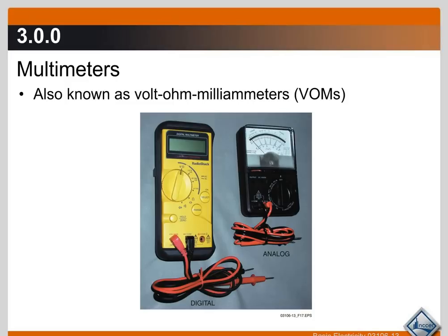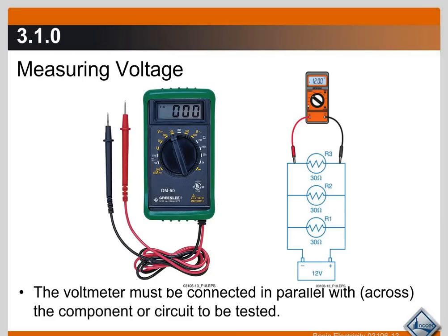We'll start with multimeters, also known as volt-ohm-milliammeters. Today they also measure temperature, capacitance, and some measure the velocity of air coming out of ductwork — there are a lot of different options. Here are two basic volt-ohm-milliammeters: a digital and an analog meter. Analog meters are old school — you'll probably never own one. This digital meter here is also getting to be a bit old school with all the new meters coming out.